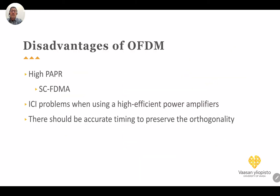We mentioned high PAPR as one of the disadvantages of OFDM, and SC-FDMA is used in the uplink for battery-operated devices. We also have the problem of intercarrier interference when using a higher-efficiency power amplifier — a lower operating point reduces the DC current inside the amplifier but causes clipping of the signal, which may cause ICI (intercarrier interference).